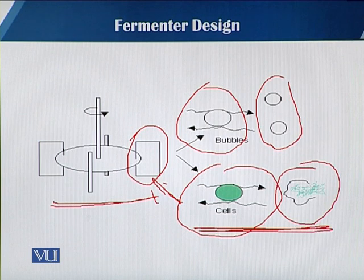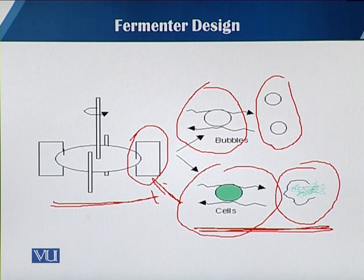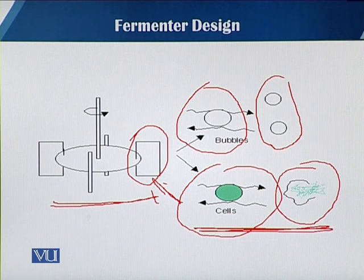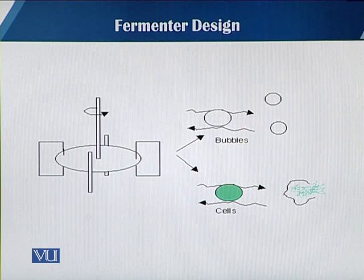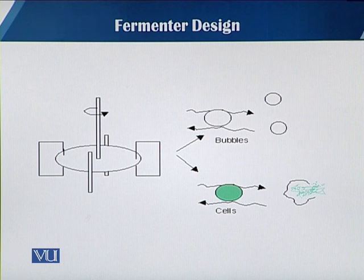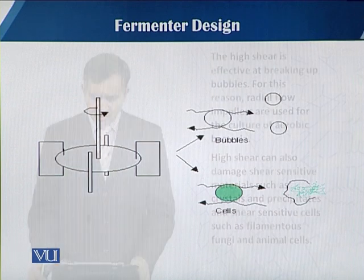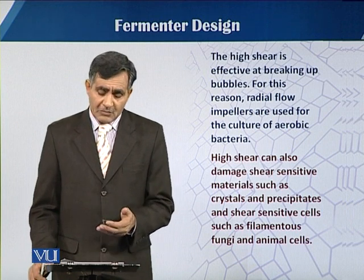But sometimes when we need the shear effect towards the cells, it goes negative when there is a continuous shear to the cells. There is no mass culturing, and all the time when there is disruption of the cells there is an increase of the toxicity inside the fermenter. That is why the radial impellers sometimes have a very negative impact. However, the high shear is effective in breaking of the bubbles.